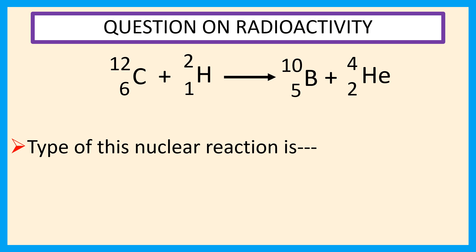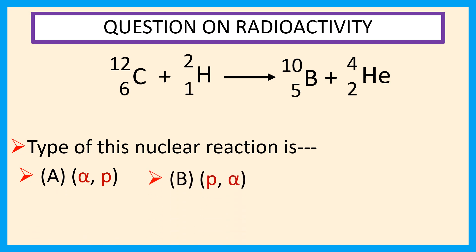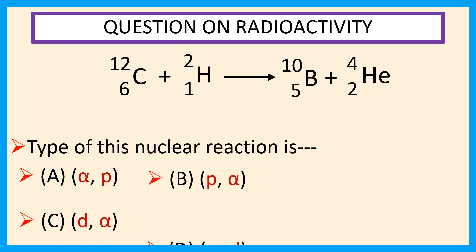The choices are: A — alpha P, B — P alpha, C — D alpha, D — alpha D.